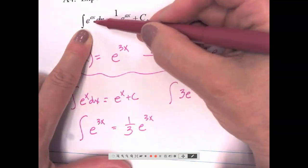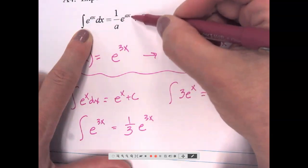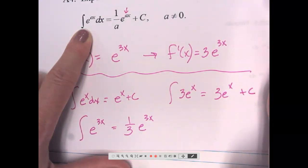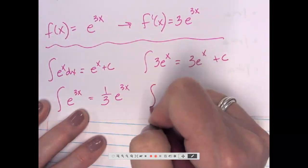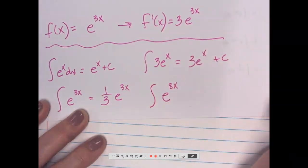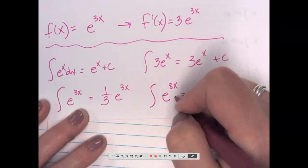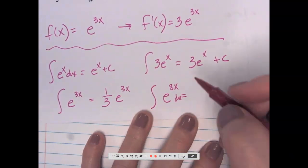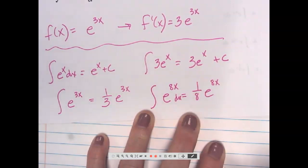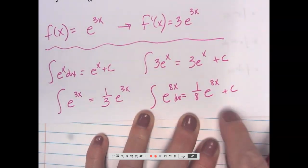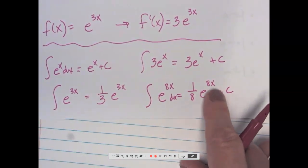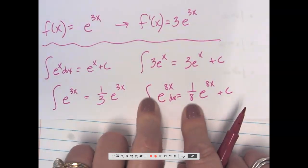Here is the rule: the antiderivative of e to the ax is (1/a) e to the ax plus C, where a was our 3 in that example. So if I had the antiderivative of e to the 8x dx, that would be (1/8) e to the 8x plus C. If I take the derivative: (1/8) e to the 8x times 8 — eight times one-eighth becomes a coefficient of 1. So it checks out.